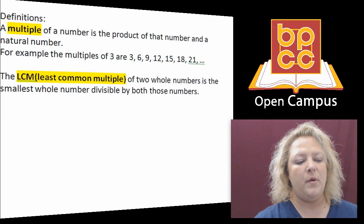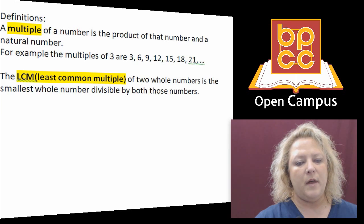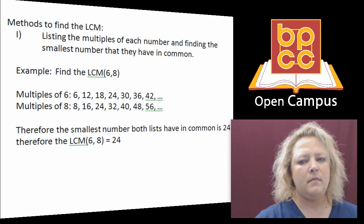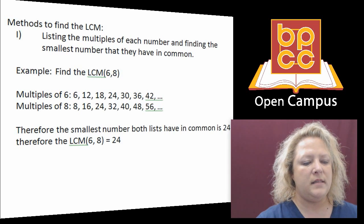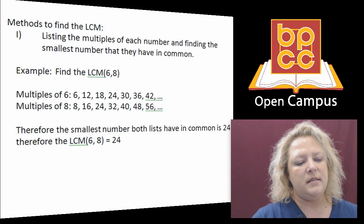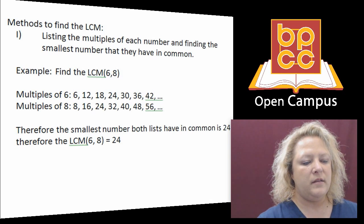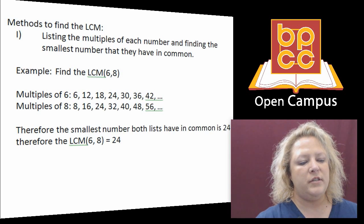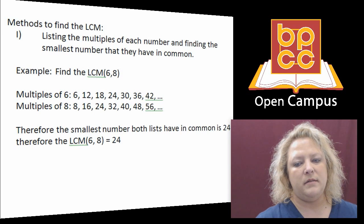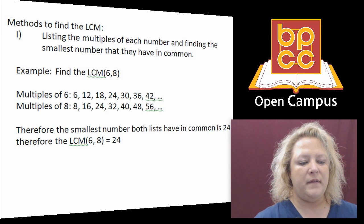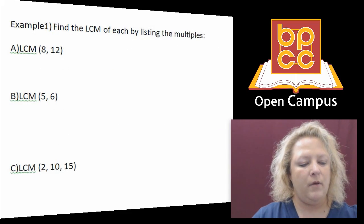And then you want the least common multiple. What we're going to do is find either pairs of numbers or groups of numbers and try to find the smallest number that all of them divide into. This is an example of finding the least common multiple of 6 and 8. You can list the multiples where you just do 6 times 1, 6 times 2, 6 times 3, and find the smallest number that they both divide into, which was 24. We're going to work a couple on the board.